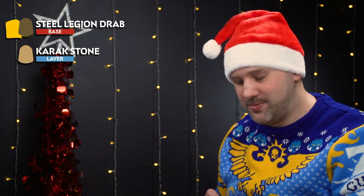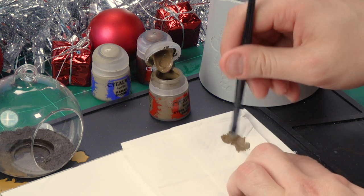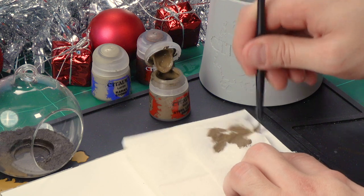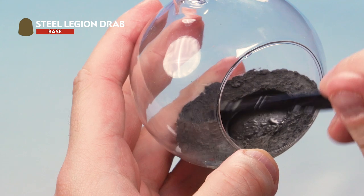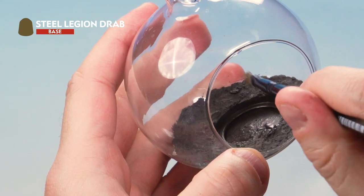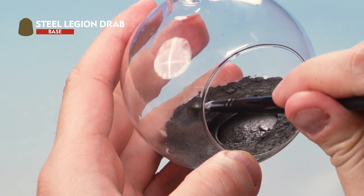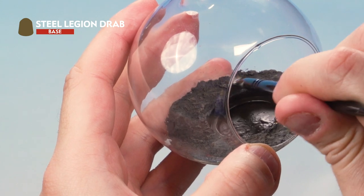Okay, up next let's dry brush over the top of that Stirland Mud with a couple of colours. First Steel Legion Drab, then Karak Stone. For both of these, grab your small dry brush. Let's take some Steel Legion Drab from the pot and onto our piece of tissue paper here. Now I'm going to work off most of this into the tissue paper. Then onto the bauble. Here we're just going to dry brush all over the Stirland Mud at the top. You can see the lighter areas being picked out like this.